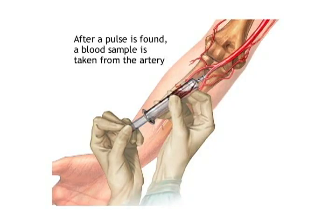The use of a systematic approach to arterial blood gas analysis is the key to accurately identifying acid-base disturbances. First, evaluate the pH. An increase means alkalosis; a decrease means acidosis.